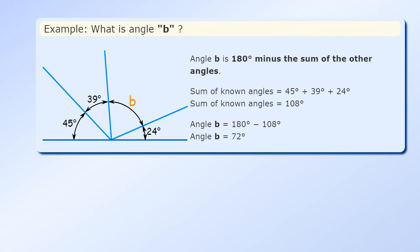Sum of known angles equals 45 plus 39 plus 24 equals 108 degrees. So angle B equals 180 minus 108. So angle B equals 72 degrees. And there you have it.